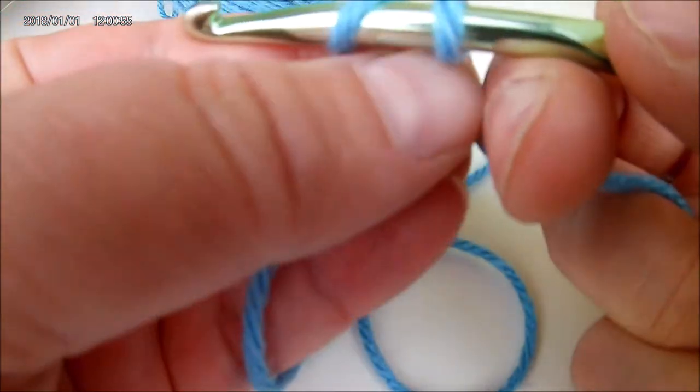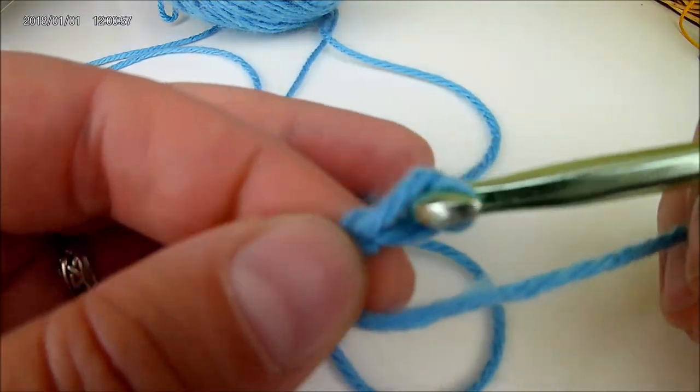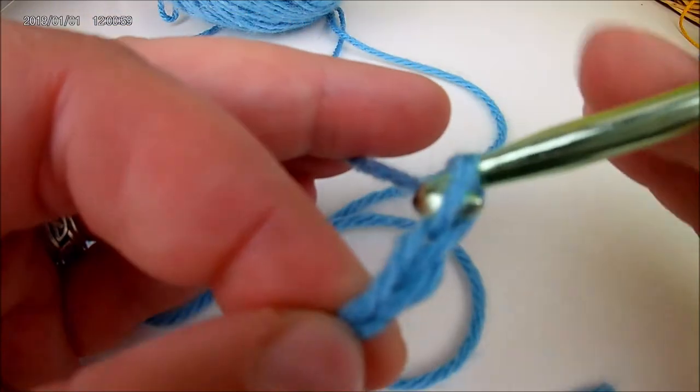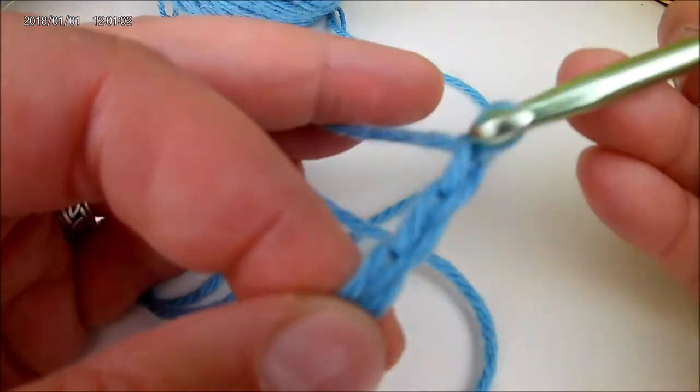Next you're going to yarn over the hook, pull through the loop, yarn over the hook, pull through the loop, yarn over the hook, pull through the loop.